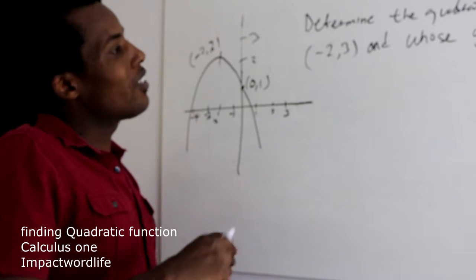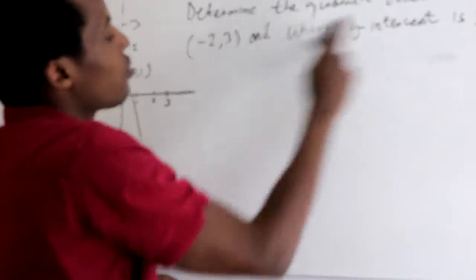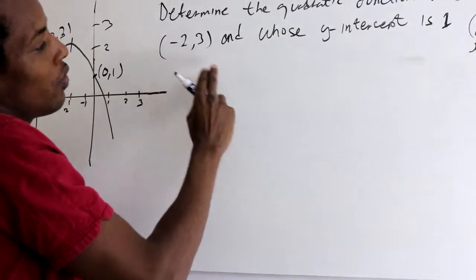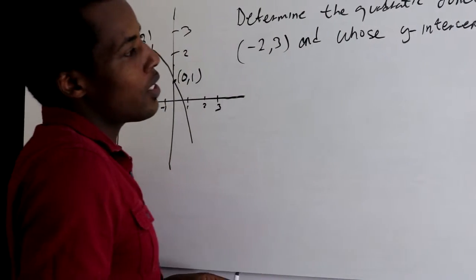So for us to calculate a quadratic equation, determine the quadratic function whose vertex has been given as negative 2, 3 and whose Y-intercept is 1. That's like 0, 1 for Y-intercept.